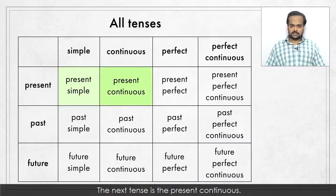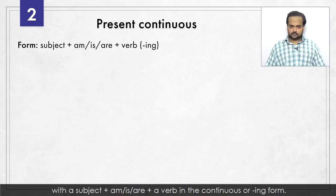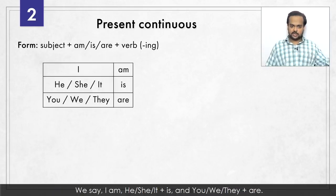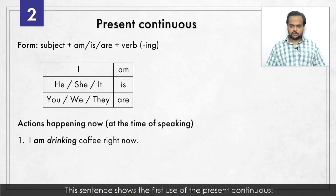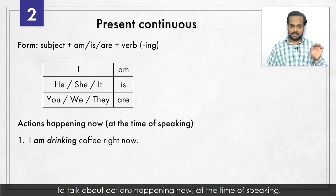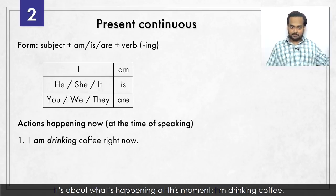The next tense is the present continuous. We make the present continuous tense with a subject, plus am, is, or are, plus a verb in the continuous or -ing form. We say: I am; he, she, it is; and you, we, they are. For example: I'm drinking coffee right now. This sentence shows the first use of the present continuous – to talk about actions happening now, at the time of speaking. This is not a general statement about my coffee-drinking habit; it's about what is happening at this moment.